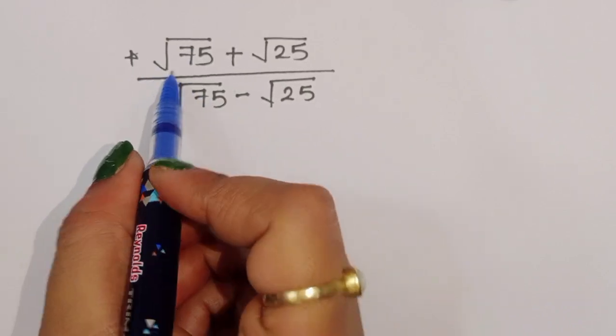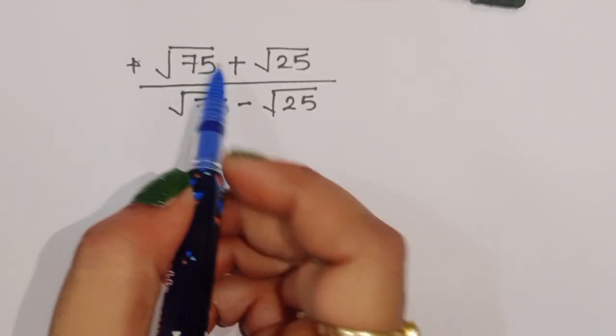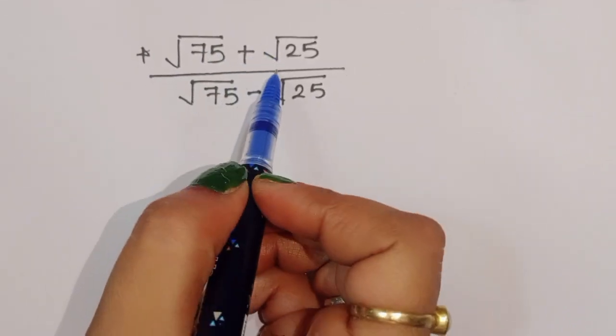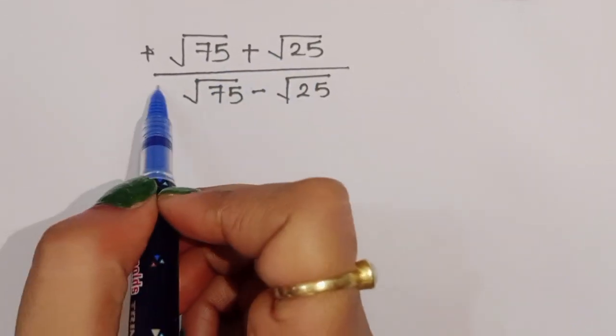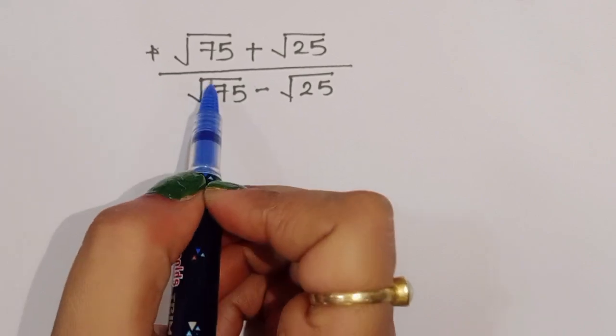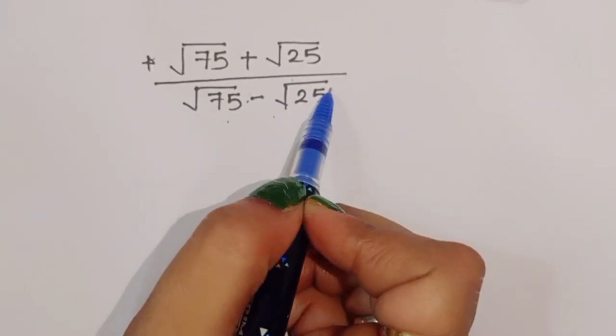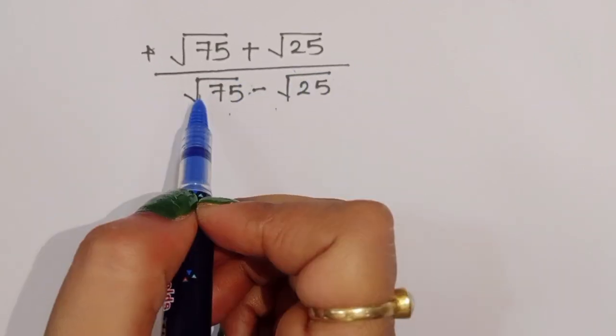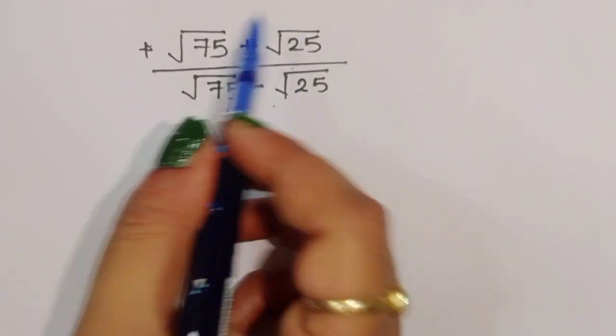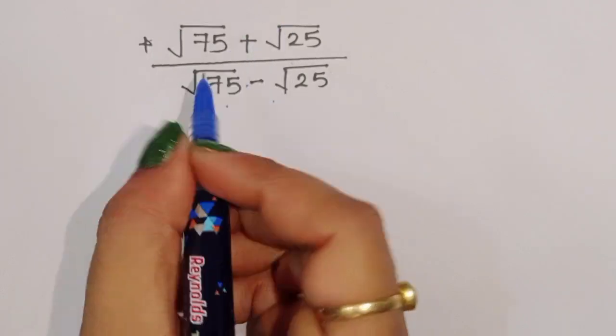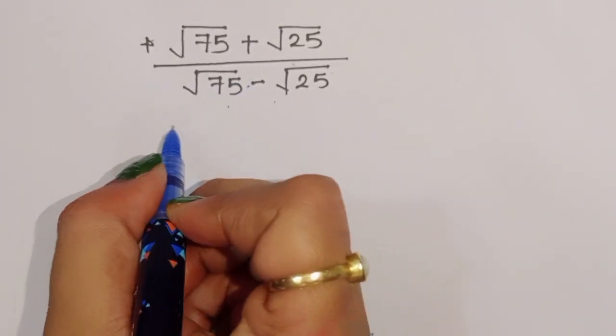The question given is: square root of 75 plus square root of 25, divided by square root of 75 minus square root of 25. How can we solve this type of question? Let's see the solution.